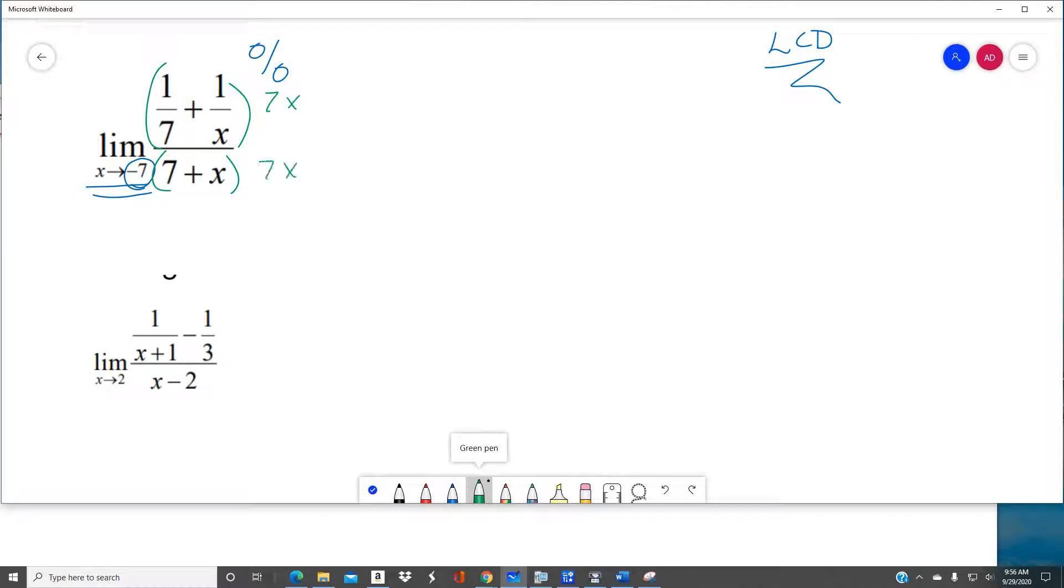The way you find the least common denominator is check out all your little denominators. A 7, an X, and a 1. The LCD in this case would be 7X. So all I've done is I've multiplied by 1. That's really all I'm doing here. I think sometimes we forget that that's the power of 1. So check this out.